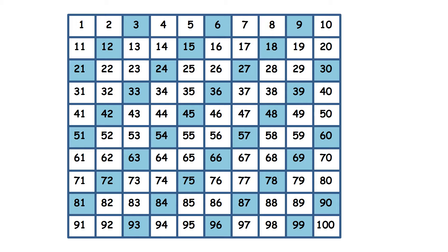Well we don't know from the units digit whether a number is a multiple of 3. So the 3 times table isn't like the 2, 5 or 10 times tables. But you've probably spotted that the numbers or the multiples of 3 go diagonally like that.